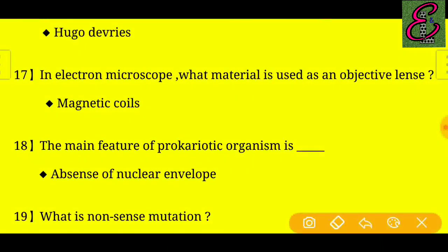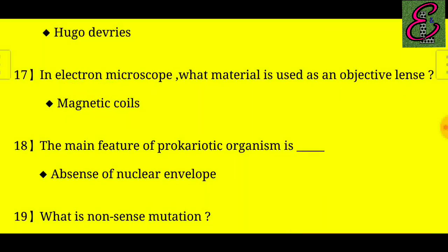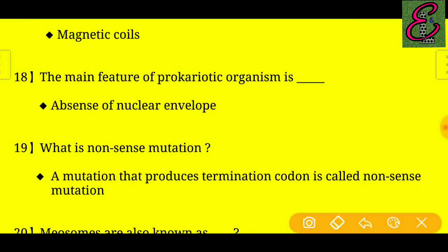Question number seventeen: In an electron microscope, what material is used as an objective lens? Answer: Magnetic coils.